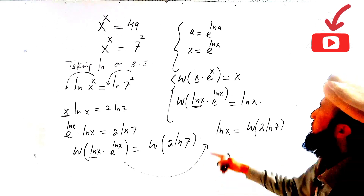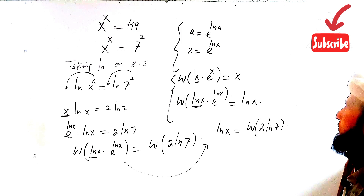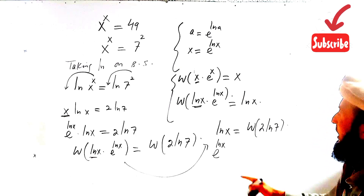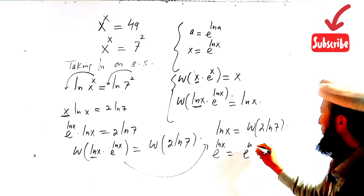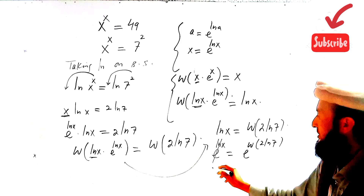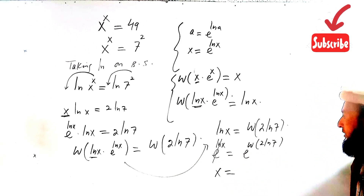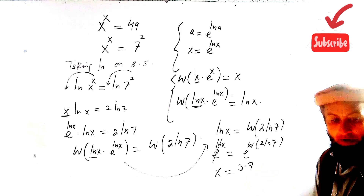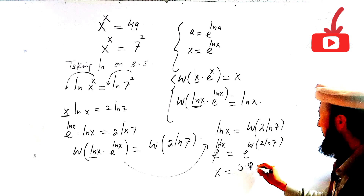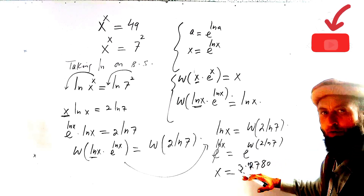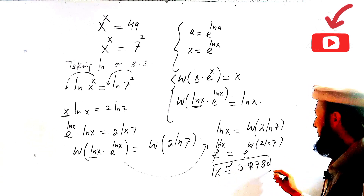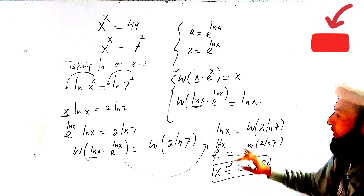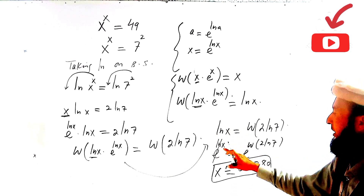Now to get the value of x, we apply the exponential to both sides. E^(log x) = E^(W(2·log 7)). Since log(x) and E cancel, log(E) = 1, both cancel and we get x. Applying the calculator for the W function, we get x ≈ 3.2780.